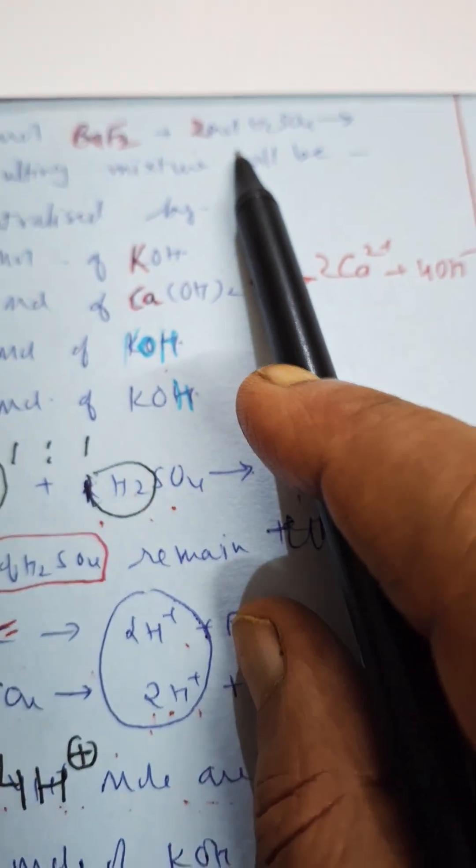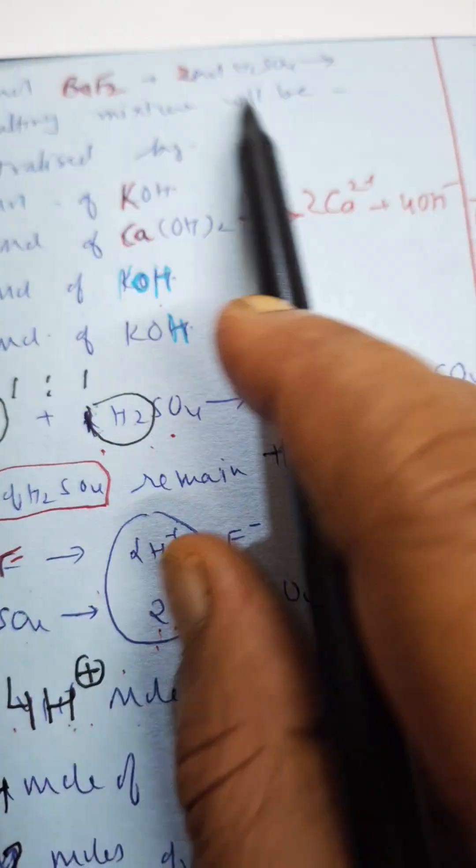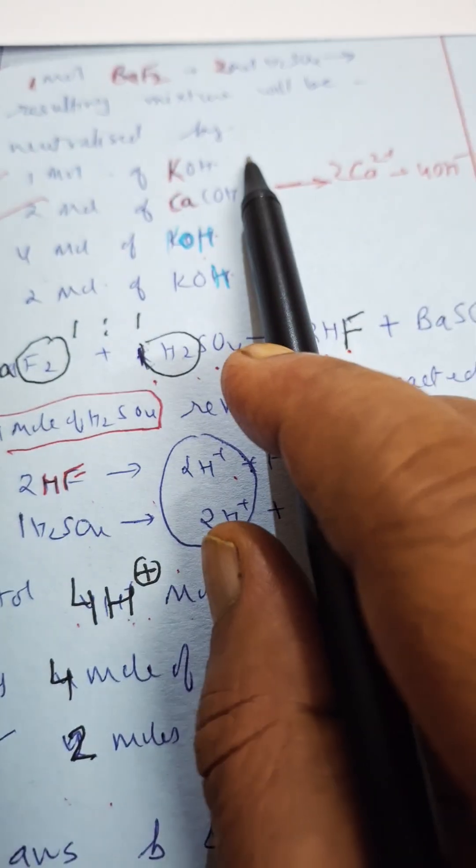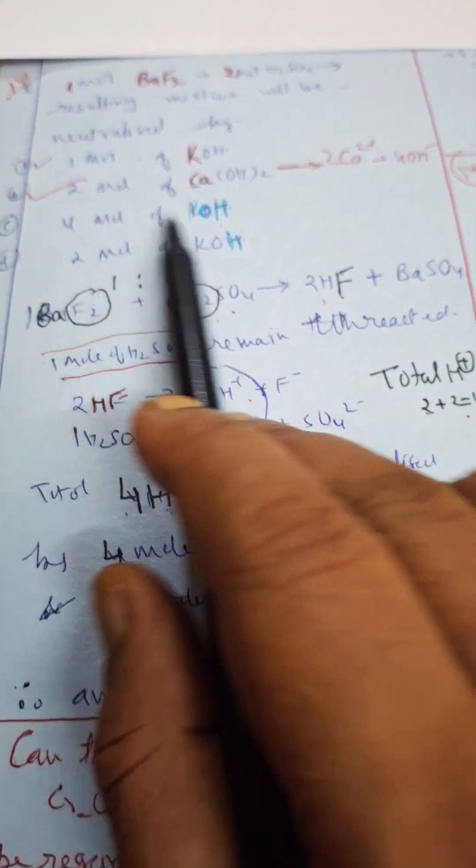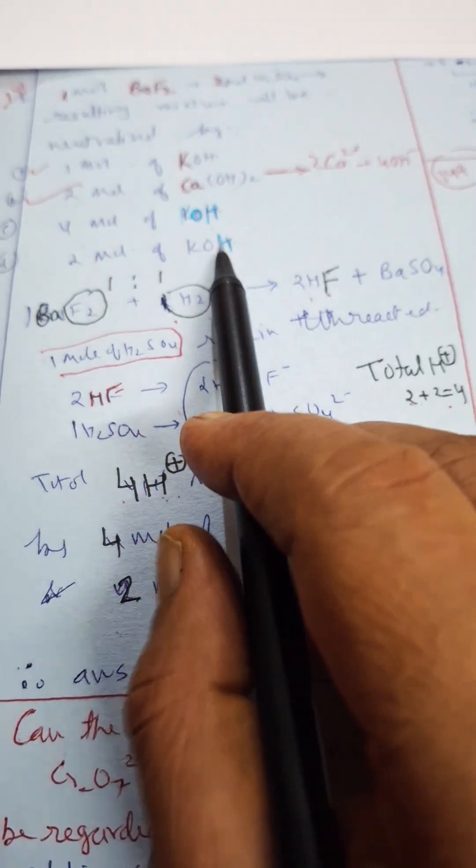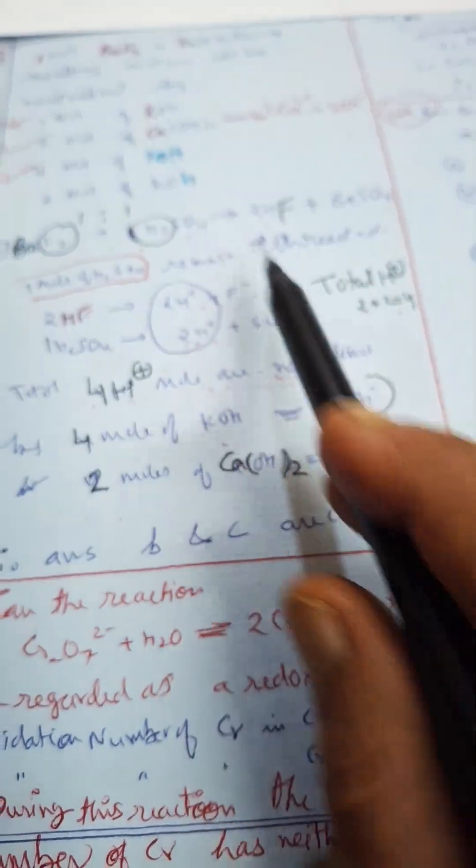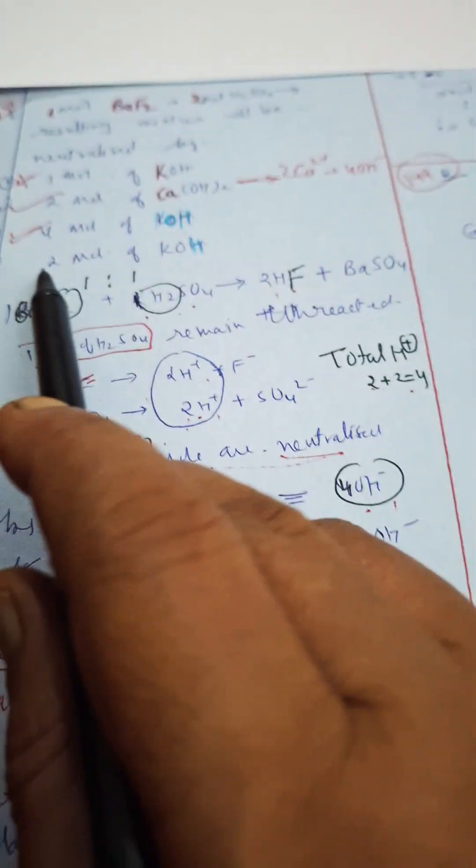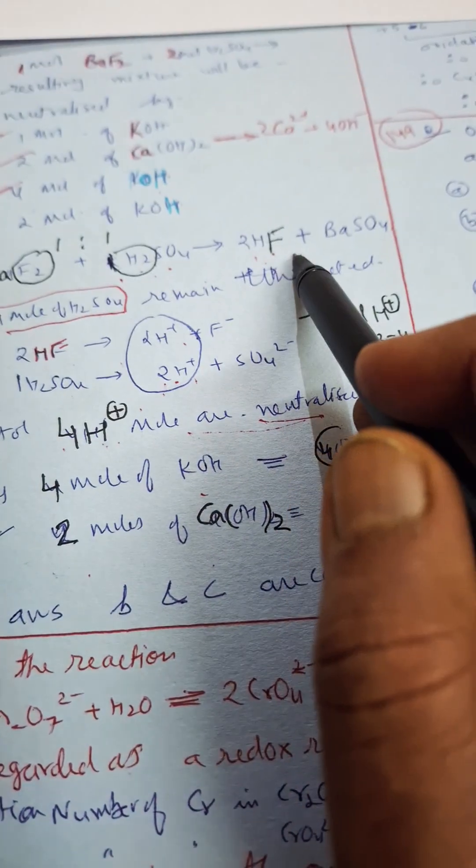Again I will repeat this question. When one mole of BaF2 barium fluoride reacts with two moles of H2SO4, the resulting mixture will be neutralized by: one mole of KOH, two moles of Ca(OH)2, four moles of KOH, two moles of KOH. So this one mole will not be there, four moles is correct. Okay, one mole will give you only one OH-, so it will not be neutralized.